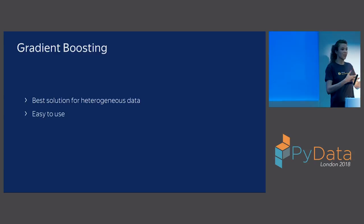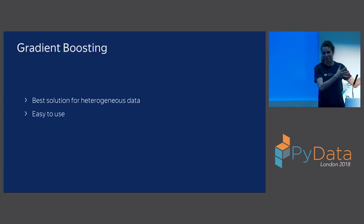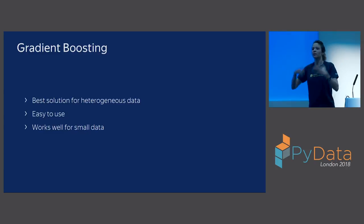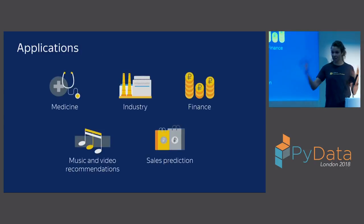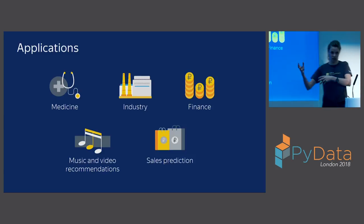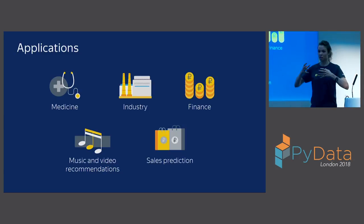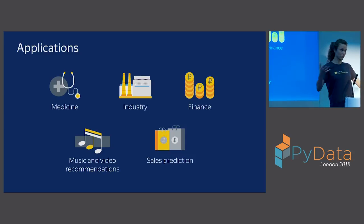In industry and on Kaggle competitions on this type of data, the best solutions are usually based on gradient boosting. It is very easy to use — you do not have to be an expert like with neural networks to build a good architecture. You just give your dataset to the model and it just works. It also works well even if you have a very small amount of data. It is heavily used in finance, for credit scoring, and in recommendation systems to predict if a person will like a song.